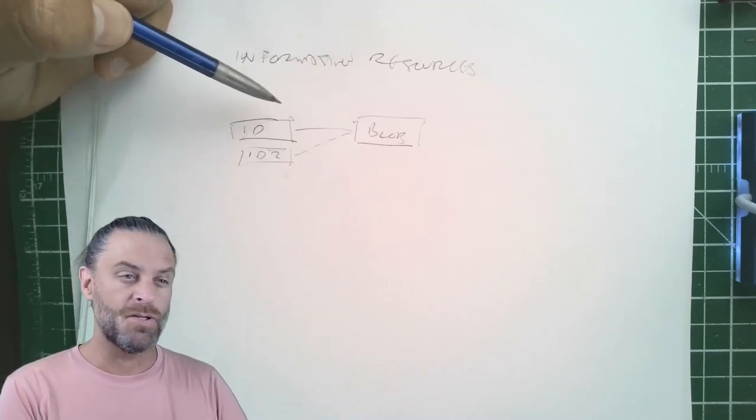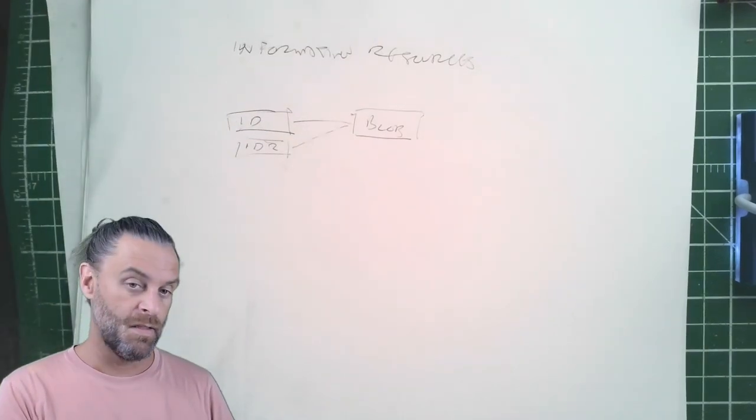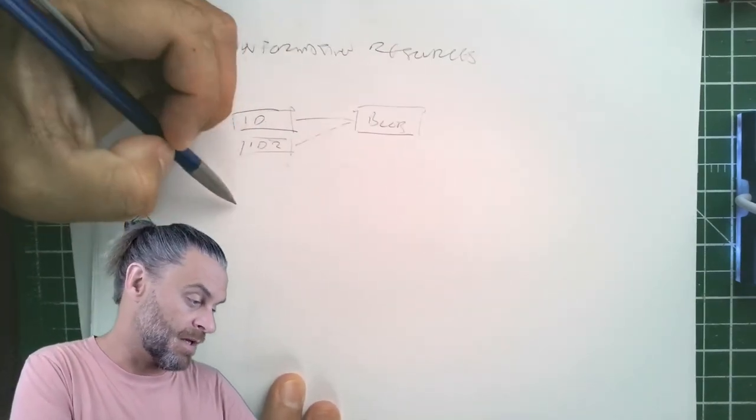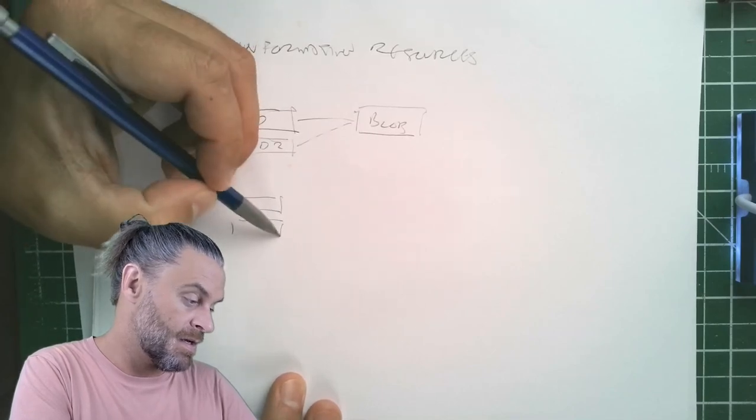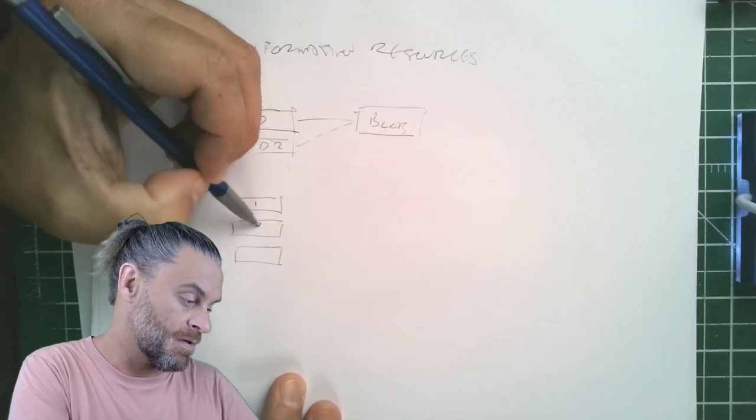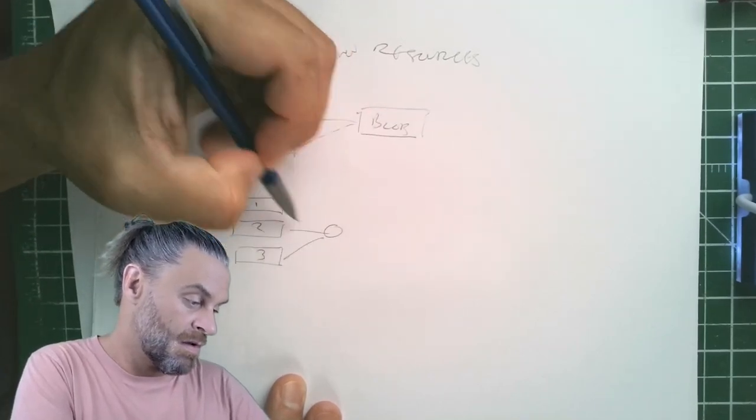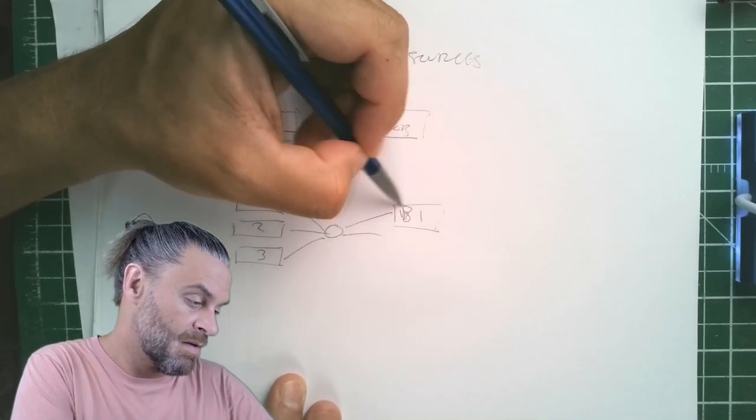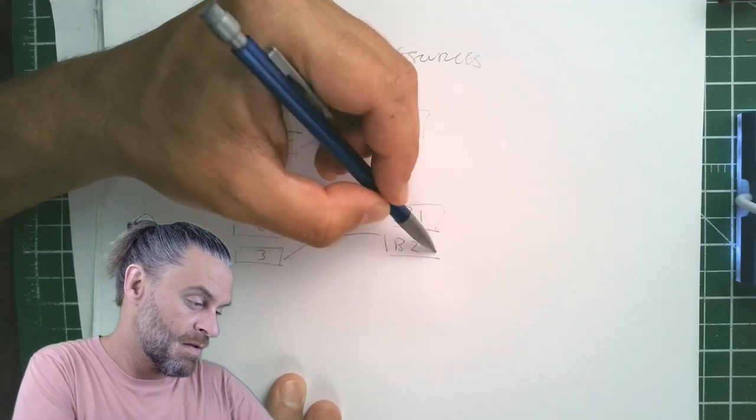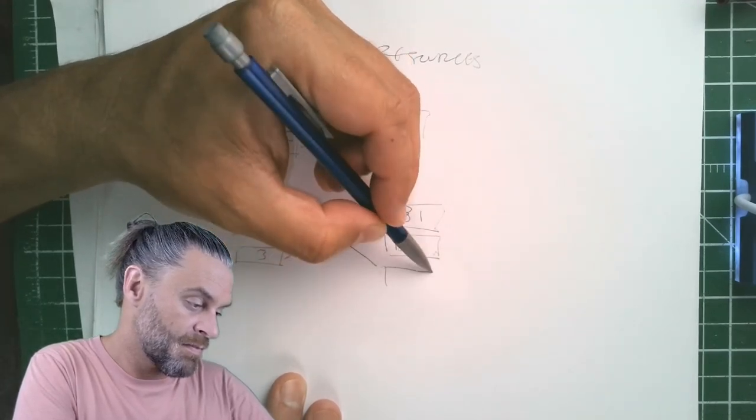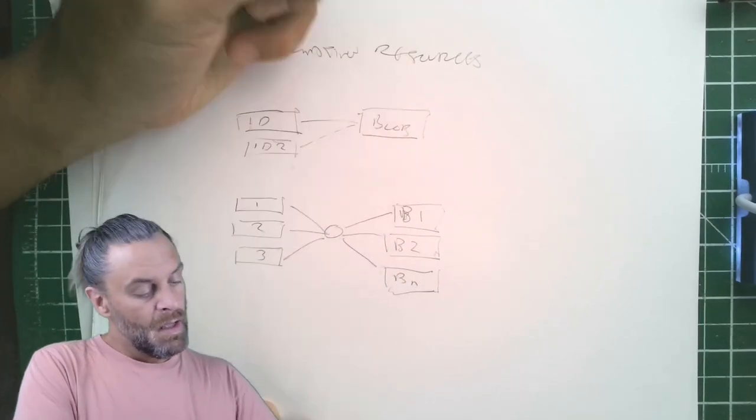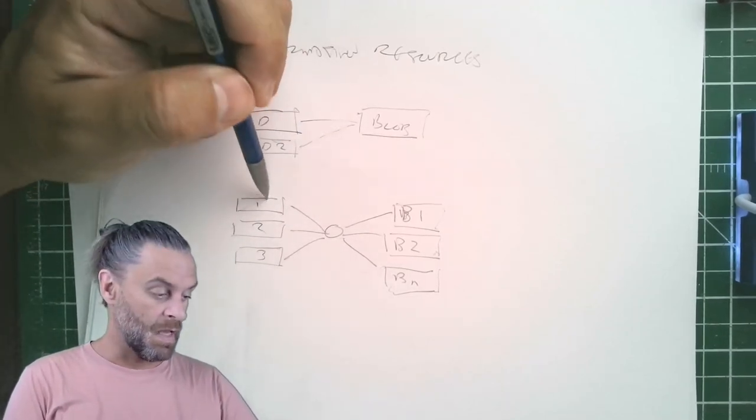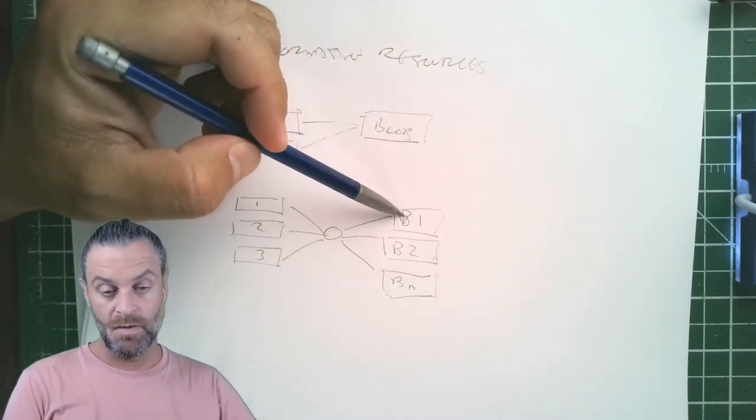Now an information resource is a more abstract thing than this. A resource is actually a sort of many-to-many relations between IDs. You can have like a bunch of them here: one, two, three. So an information resource actually yokes together at least one identifier to at least one representation.